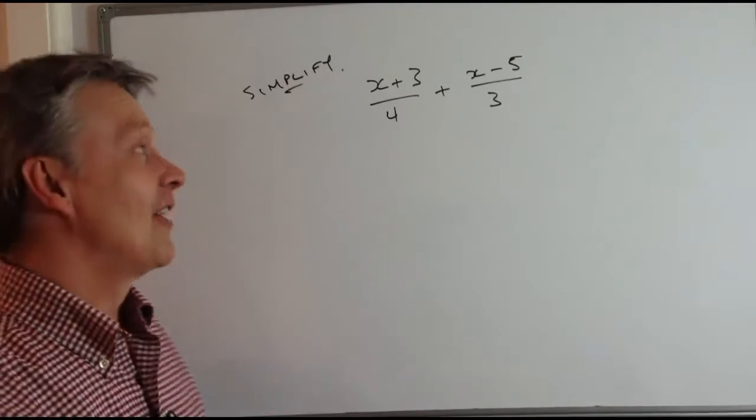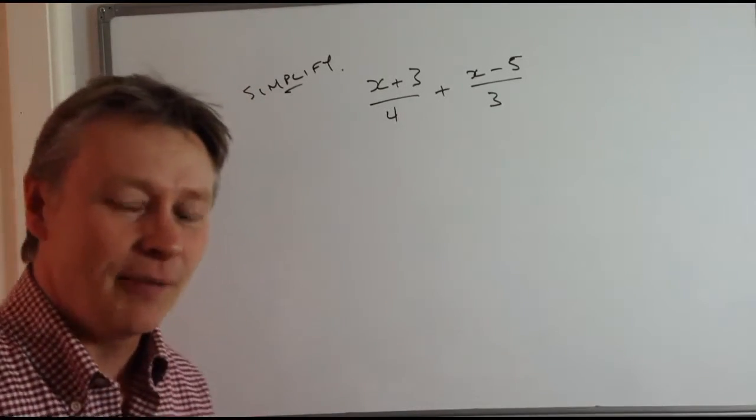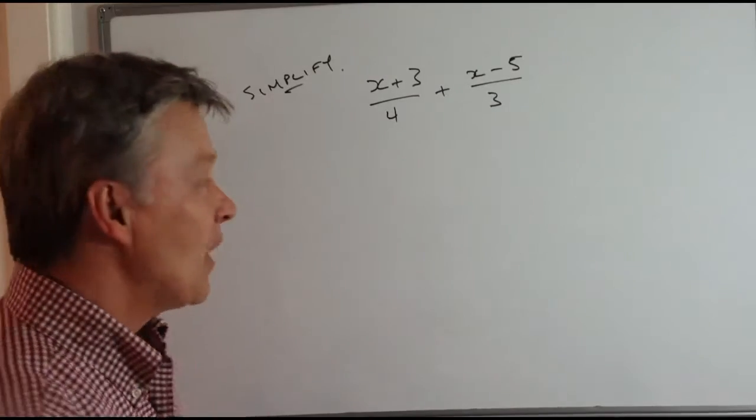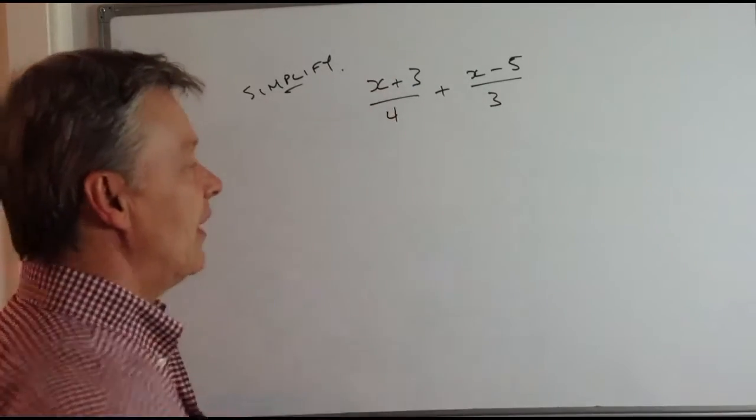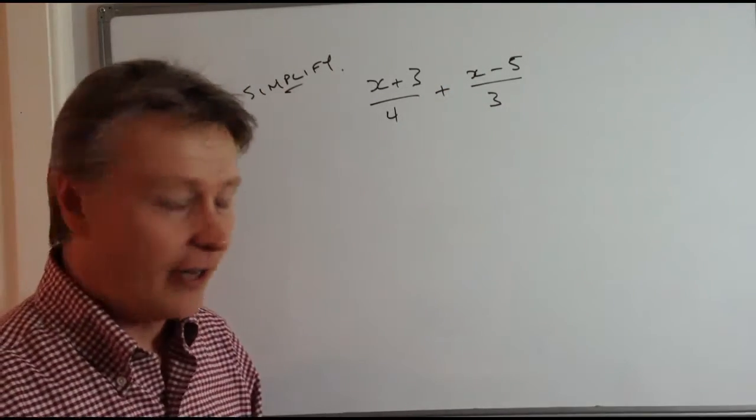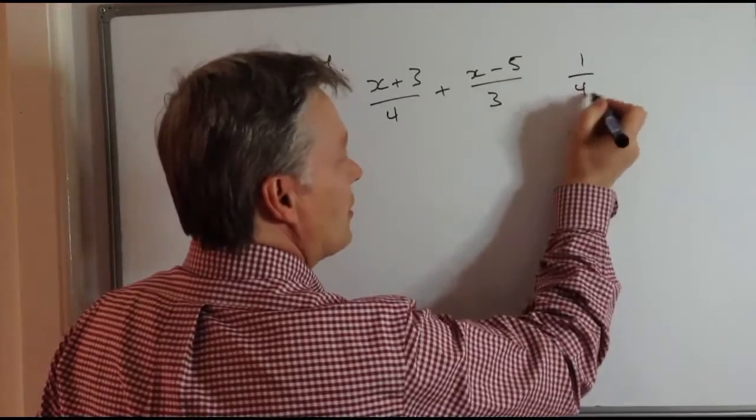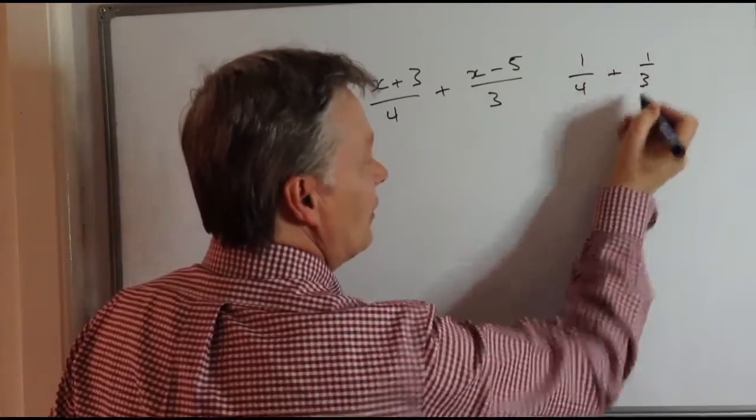So they're looking for you to simplify that. We're going to use exactly the same ideas that we've done before. If you look at something like that and just kind of ignore this x+3 and this x-5.